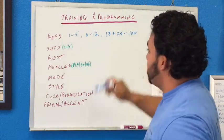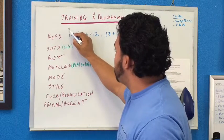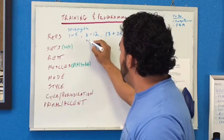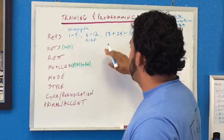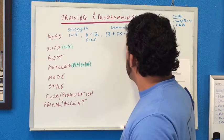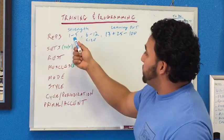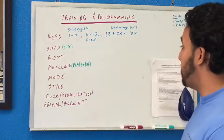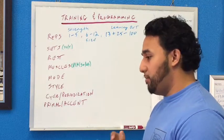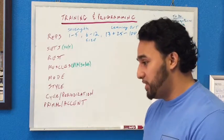Each one has a specific purpose for what it's going to do for the client. As far as reps, anywhere from 1 through 5 will be strength. What happens with strength is that typically you're going to go heavier in weight — so lots heavier. Because of that, you can only do 1 to 5 reps. You're building the strength in the muscle fibers, the tensile strength, and that's going to allow you to do heavier and heavier weights.